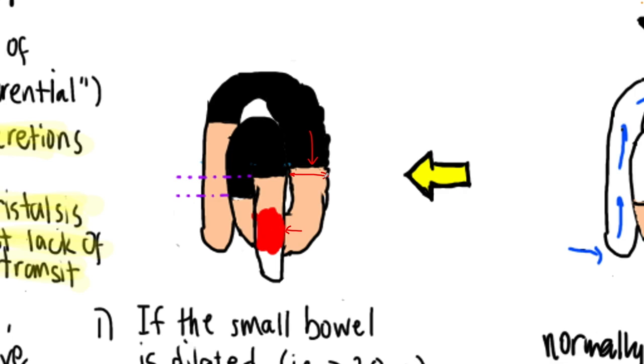The end product is the proximal bowel progressively dilating and the lumen increasing in its volume of secretions. In this picture, you can see the amount of fluid is increasing and creating these air fluid levels at multiple points along the bowel.